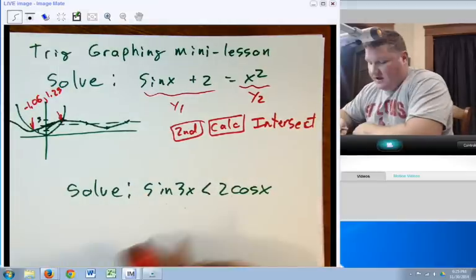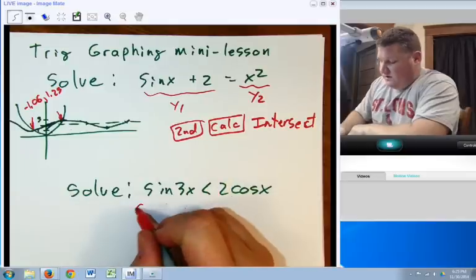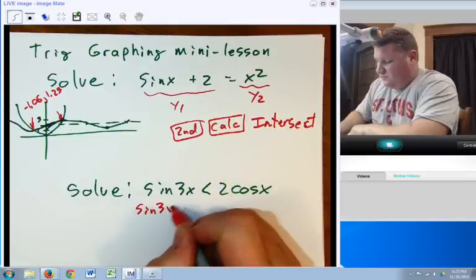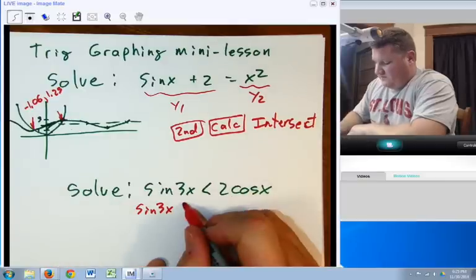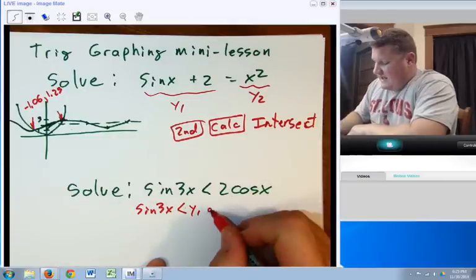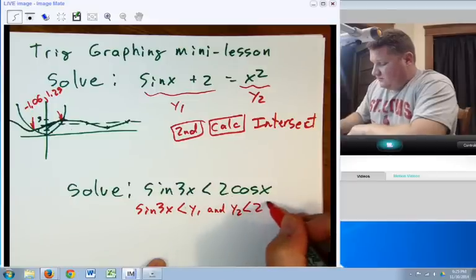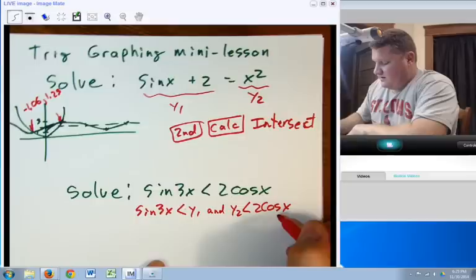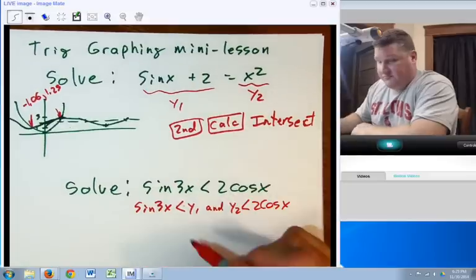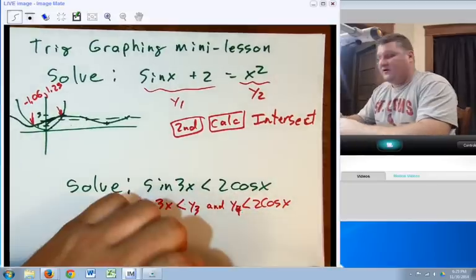Now, if I have something down here where I have inequalities, what I'm going to do is I'm simply going to say the first equation, less than, because I have less than sine, y1, and then I'm going to say y2 less than 2 cosine x. Now, in this case, the way I put them into calculator, I've made this y3 and this y4, but it doesn't frankly matter.